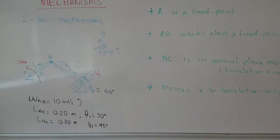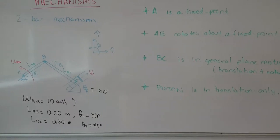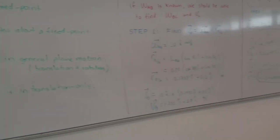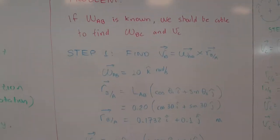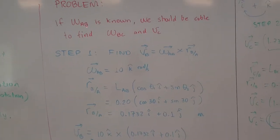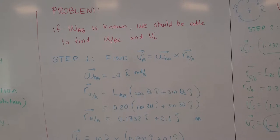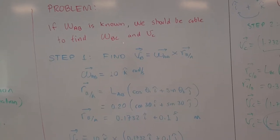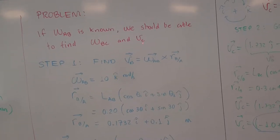So let's proceed with the solution using the vector method. Well, the problem is, knowing the angular velocity of bar AB, find the angular velocity of bar BC and the velocity of the piston at C.